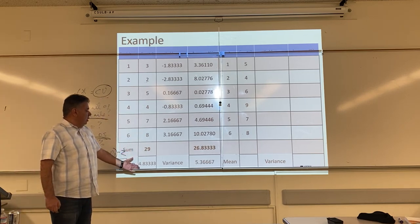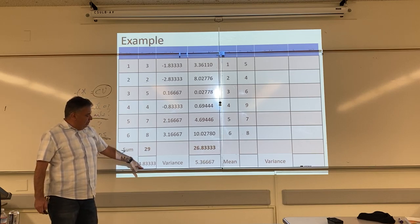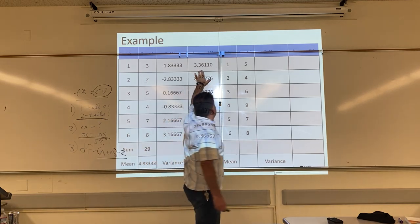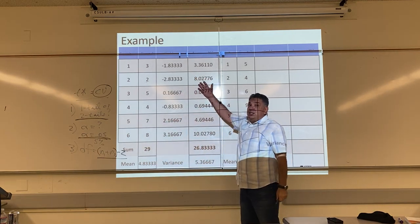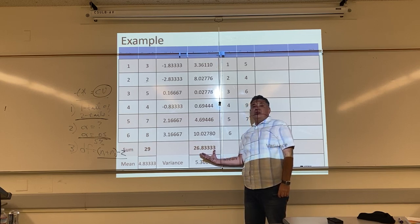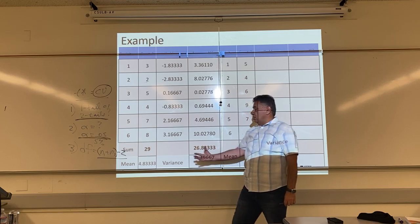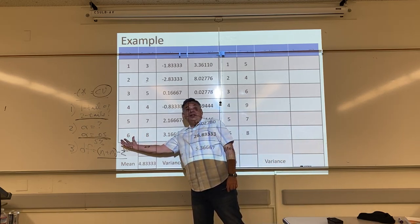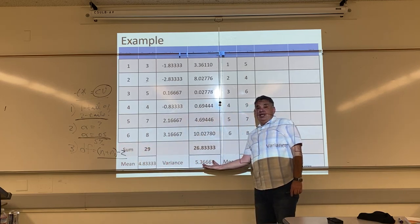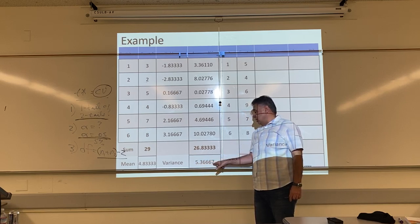So using 4.833333 as my mean, 3 minus 4.833333. Here's my difference. Here's my difference squared. I do that all the way down. Here is the sum of the differences squared, also known as the sum of the squares. The sum of the squares divided by 5, my degrees of freedom, n minus 1 gives me my variance. To five decimal places, it's 5.36667.